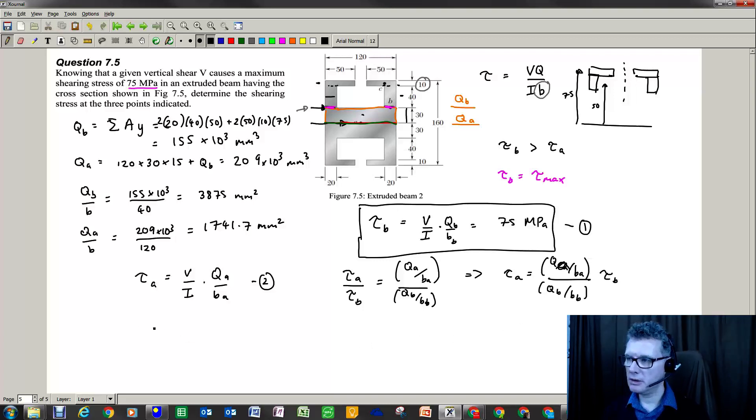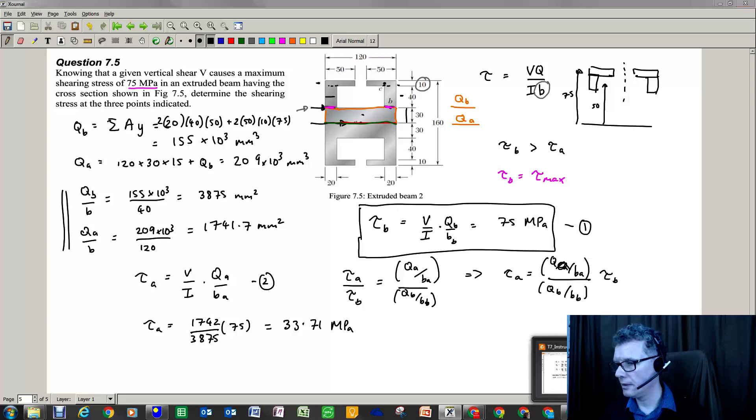So bring up the stress b value. And then you can see that we've just got a ratio of terms here. Qa over ba divided by Qb over bb times by the stress at b. So what's that? 1742 divided by 3875 times by 75. So although this was kind of a, I felt at first, a pointless exercise, finding these values, it does come in useful later on in the calcs to work out the other stress values. So that divided by 3875 times by 75, and I get 33.71 megapascals. Okay, yes, so that agrees with Arnold.